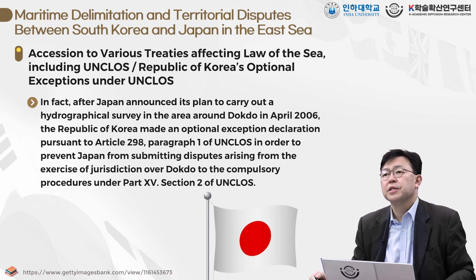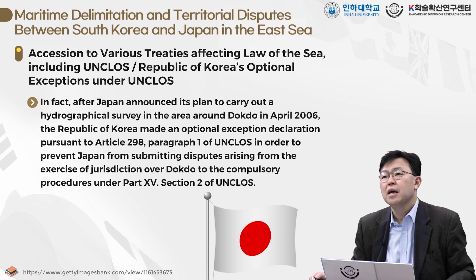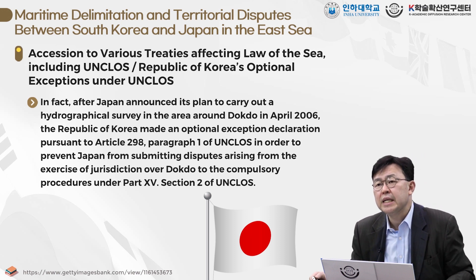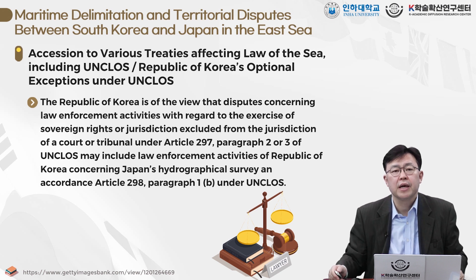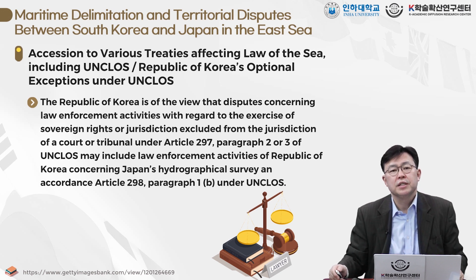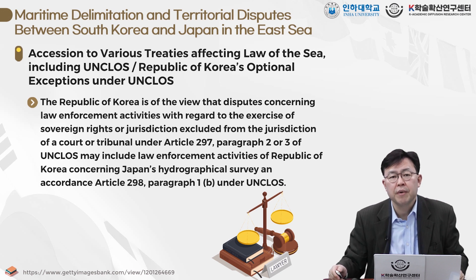In fact, after Japan announced its plan to carry out a hydrographic survey in the area around Dokdo in April 2006, Korea made an optional exception declaration pursuant to Article 298 Paragraph 1 of UNCLOS, in order to prevent Japan from submitting disputes arising from the exercise of jurisdiction over Dokdo to the compulsory procedures under Part 15 Section 2 of UNCLOS. Korea is of the view that disputes concerning law enforcement activities with regard to the exercise of sovereign rights or jurisdiction, excluded from the jurisdiction of a court or tribunal under Article 297 of UNCLOS, may include law enforcement activities of Korea concerning Japan's hydrographic survey, in accordance with Article 298 Paragraph 1(b) under UNCLOS.